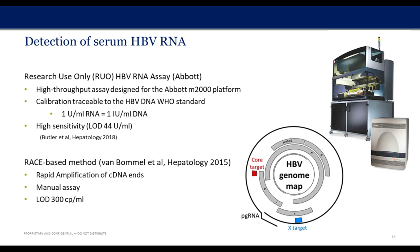In the design of this assay, we placed two targets: one in X and one in core. The rationale was twofold: first, for redundancy in case of a mutation impacting the performance of one target; and second, to understand if the virus was producing only entire pre-genomic RNA or if there were other RNA species present in the plasma — looking for the one or the combination of all.